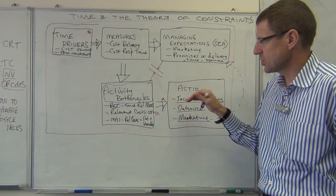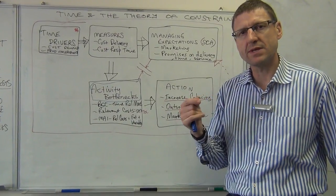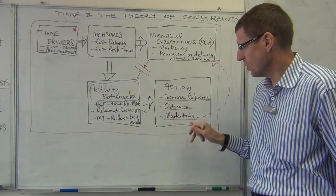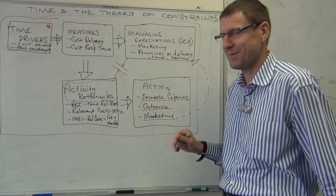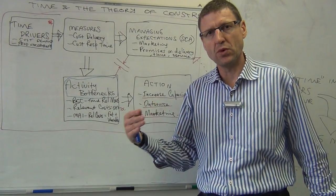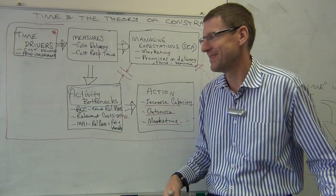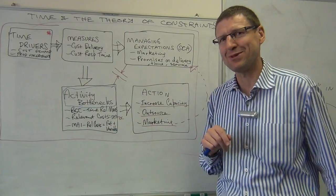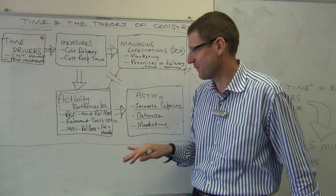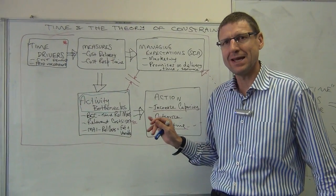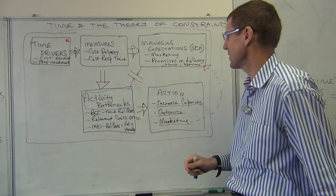Ultimately, the action that was required, if we're under time based pressure, we have some bottleneck, we want to increase capacity, or we want to outsource, or we want to market. Maybe we have to change our marketing to get more space between what the customers expect and what we can deliver. Maybe we have been over promising in the past, so then we need to change the marketing to fit with what we can actually deliver. It's so important to have that match what the customers expect and what you are delivering.